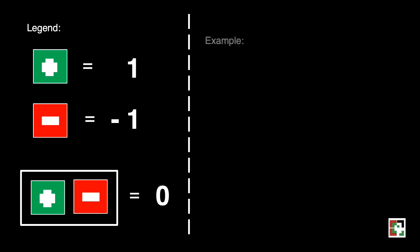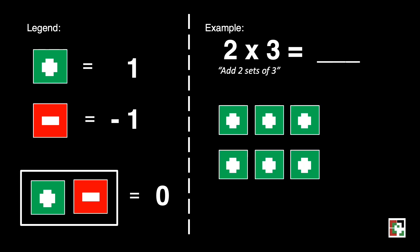Okay, let's have the examples. Let's have this one, two times three is equal to blank. It means add two sets of three. We'll be having two sets of three.